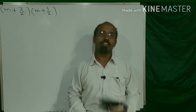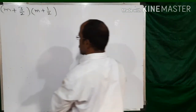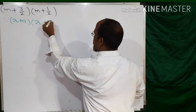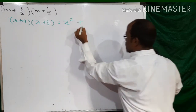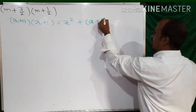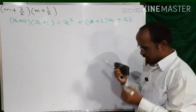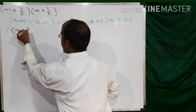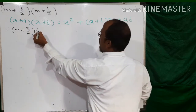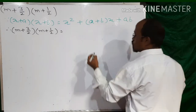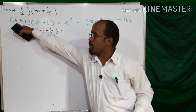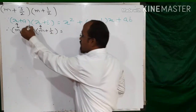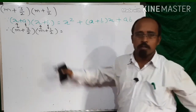If we can use the formula, let's use it. First, write the formula: if (x + a)(x + b) equals x² + (a + b)x + a·b. Then, for (m + 3/2)(m + 1/2), x will be replaced by m, a will be replaced by +3/2, and b will be replaced by +1/2.